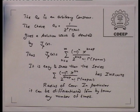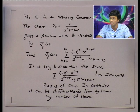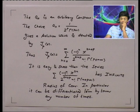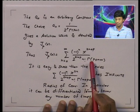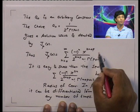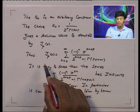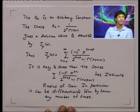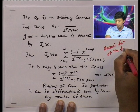A₀ is arbitrary so far. We now make a special choice: A₀ = 1 / [2^p · Γ(p+1)]. This is the normalization. With this choice, the solution becomes J_p(x) = Σ from n=0 to ∞ of (−1)ⁿ x^(2n+p) / 2^(2n+p) · n! · Γ(n+p+1). The Γ(p+1) in the numerator cancels and we get this clean formula. This particular solution is called J_p(x), the Bessel's function of the first kind.